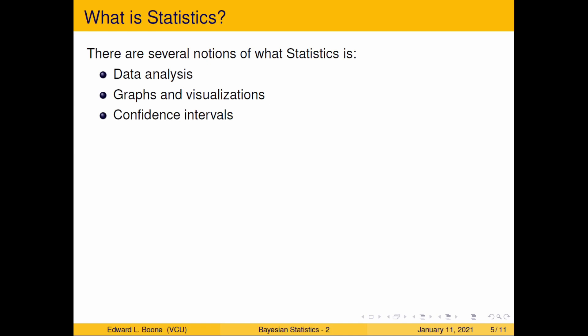Confidence intervals — that's one aspect of statistics in the sense that you're trying to make some inferences, some conclusions about quantities, and you're trying to put an interval around them, saying this value is probably between this value and that value. P-values — you've probably seen p-values before and thought, yes, that's what statistics is. No, that is a tool that helps with inference. It's not what statistics is.